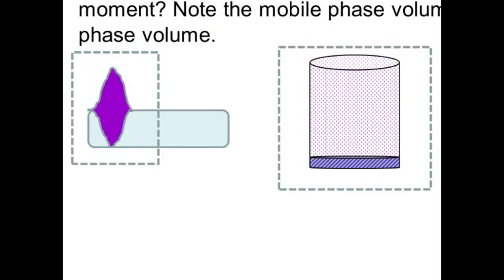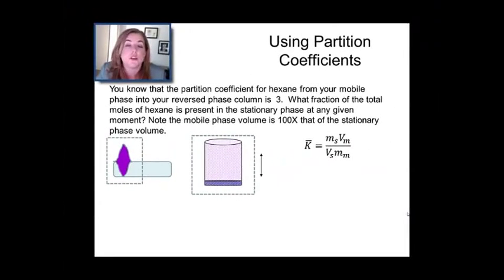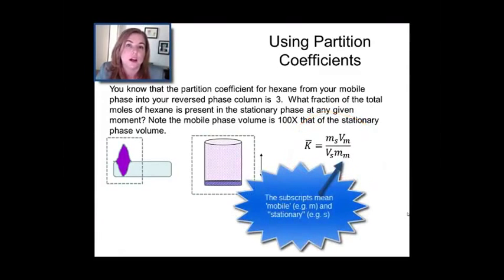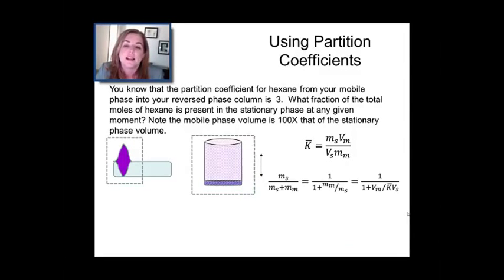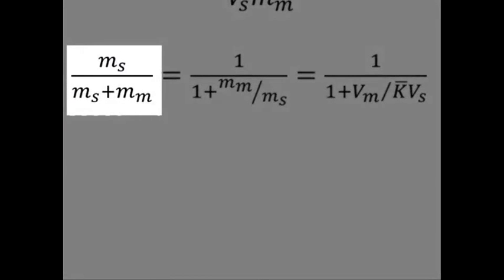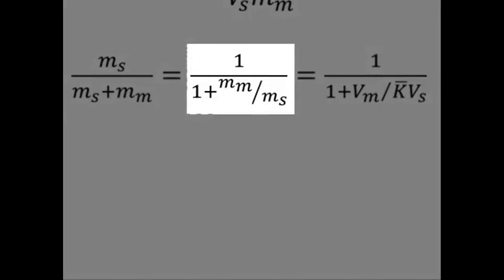So, that's what I've done here. And then I know that my partition is just the ratio of the concentrations, which is shown over here to the right. And what the problem tells me is that my mobile phase volume is 100 times more that of my stationary phase. So, that means the ratio V_m over V_s is just 100, and whatever the volumes are, cancel. So, really, what this is asking us to find is m_s, the moles in the stationary phase, divided by total moles, as shown here.